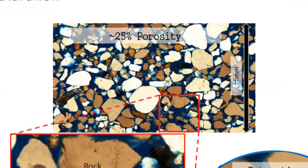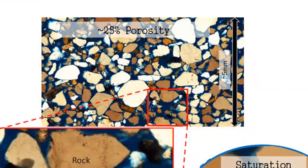You can see the rock grains in white and brown color. You can see the dark areas - these are the pores. But the pores are not empty; they are filled with fluid.